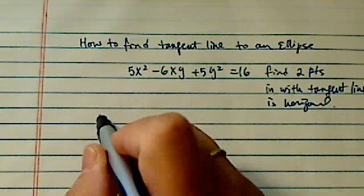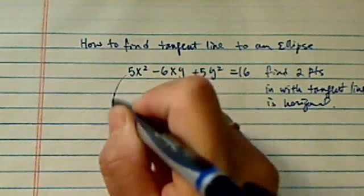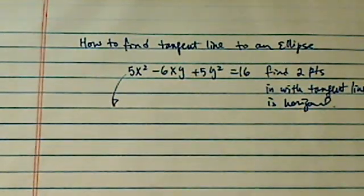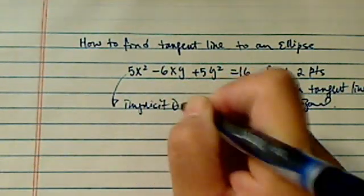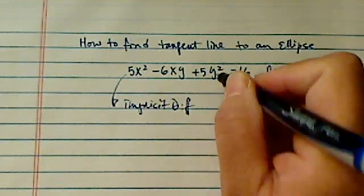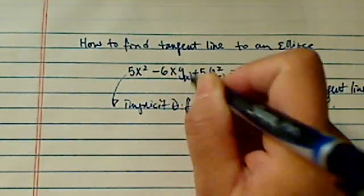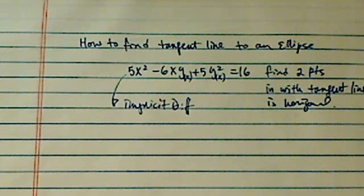First thing we need to do is find a derivative. Now since y is not explicitly in terms of x, we will have to use implicit differentiation. All it says is every time you take derivative against y, you have to treat y as a function of x.